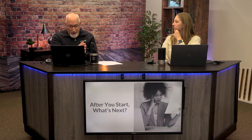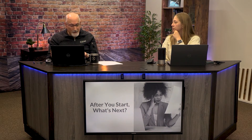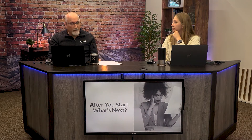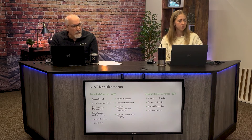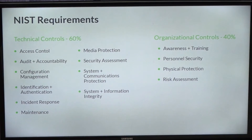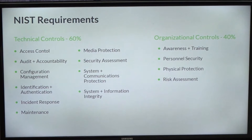Up front, getting started, really taking the time to learn those details is critical. The 110 requirements are organized into what are called 14 families — think of it as 14 topics. Those families organize themselves into what are called technical controls: things that require technology, often requiring your IT person, a third-party MSP, or managed service provider — someone with technical competency to deal with software, hardware, networking, and equipment. About 60 percent of the 110 requirements fall into this technical domain.